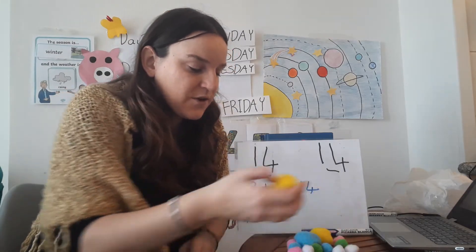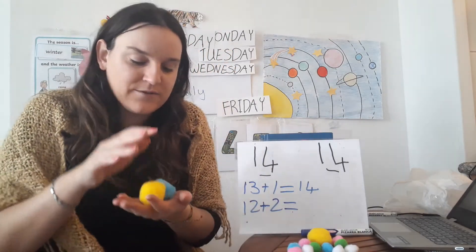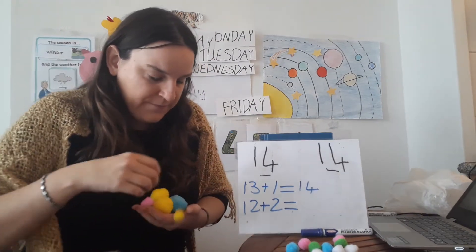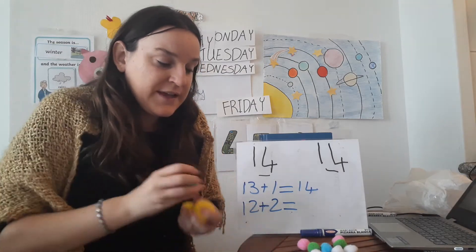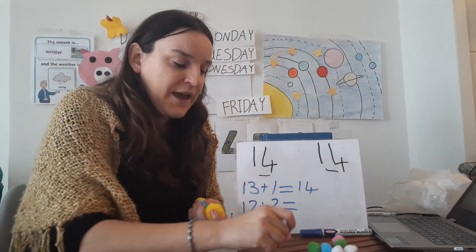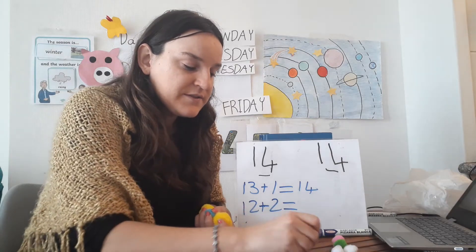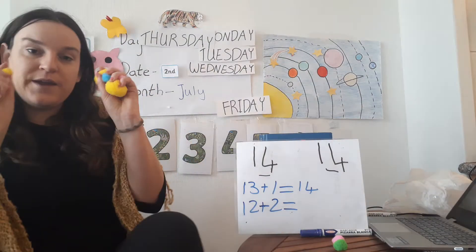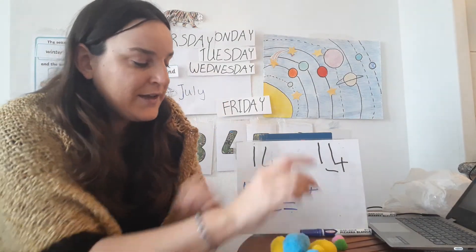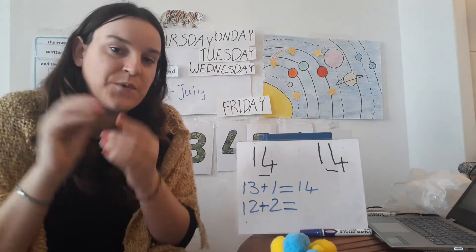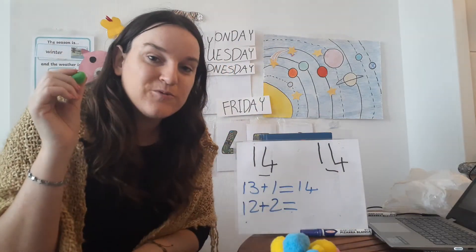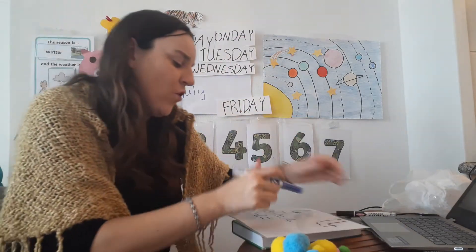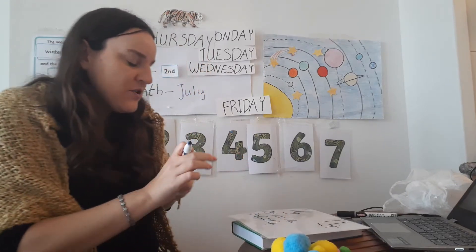Let's do it. So we have 12. Let's first count to 12. 1, 2, 3, 4, 5, 6, 7, 8, 9, 10, 11, 12. We have 12 and we add 2. 12, 13, 14. So 12 add 2 is 14. Our number of the week.